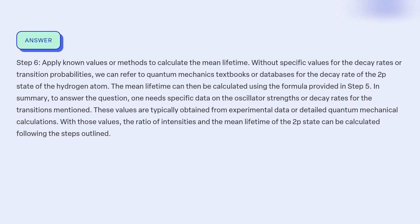Step 6: Apply known values or methods to calculate the mean lifetime. Without specific values for the decay rates or transition probabilities, we can refer to quantum mechanics textbooks or databases for the decay rate of the 2p state of the hydrogen atom. The mean lifetime can then be calculated using the formula provided in Step 5. In summary, to answer the question, one needs specific data on the oscillator strengths or decay rates for the transitions mentioned. These values are typically obtained from experimental data or detailed quantum mechanical calculations. With those values, the ratio of intensities and the mean lifetime of the 2p state can be calculated following the steps outlined.